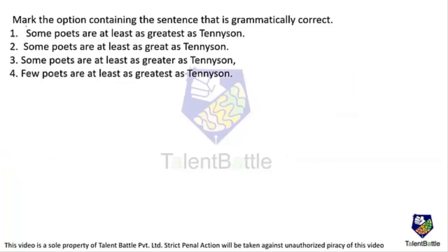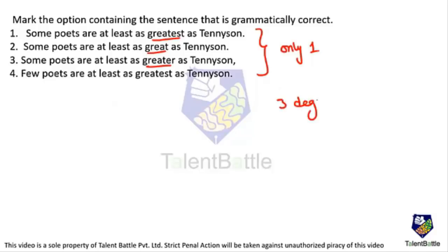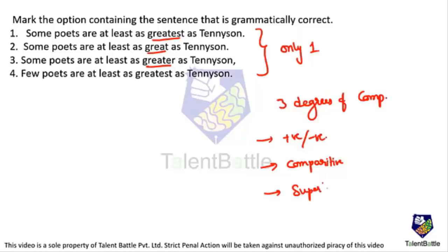The last question: mark the grammatically correct sentence. Four options use 'great,' 'greater,' or 'greatest' in comparisons. These are the three degrees of comparison: positive, comparative, and superlative. The superlative is used when talking about one person out of all — for example, 'he is the best among all students.' The comparative is used when comparing exactly two things.